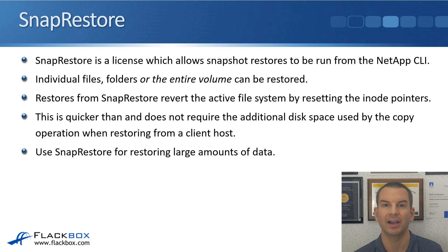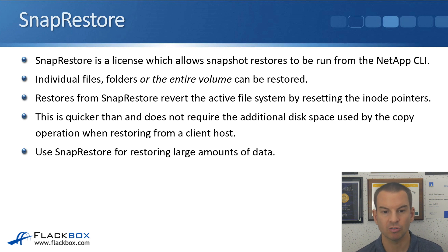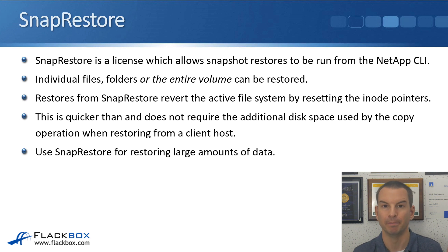We talked about how clients can do restores and looked at how the snapshot directory structure works. The last thing to cover is doing restores from snapshots using the ONTAP command line. To do this, you need to be an administrator to log on to the command line. You can then use SnapRestore — a license which allows snapshot restores to be run from the NetApp command line. This is not separate software; you just add the license code and SnapRestore is enabled, built into the normal ONTAP command line. Individual files, folders, or an entire volume can be restored using SnapRestore.